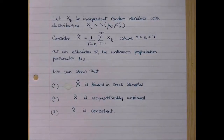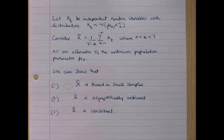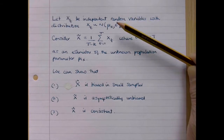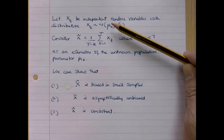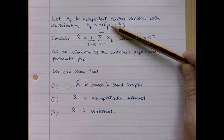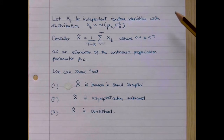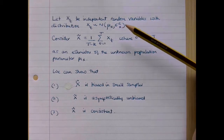In this video, we're going to show that an estimator can be biased in small samples, but asymptotically unbiased and consistent. As an example, let's consider a set of independent random variables xt, with distribution normal with mean mu x and variance sigma squared x. Now suppose we want to estimate the unknown population parameter mu x.